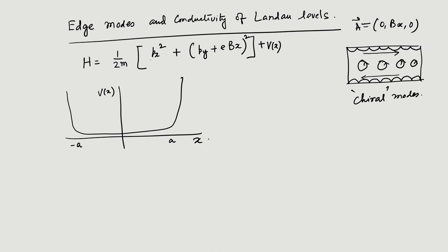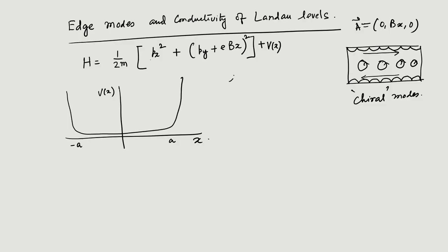In the absence of the edge potential, the lowest wave function is simply a Gaussian. It is a Hermite polynomial multiplied by a Gaussian, and for the lowest Landau level the polynomial is just a constant. The wave function has a width given by the magnetic length L_B, defined as sqrt(H-cross over eB). This magnetic length L_B appeared earlier and it depends on the magnetic field B.